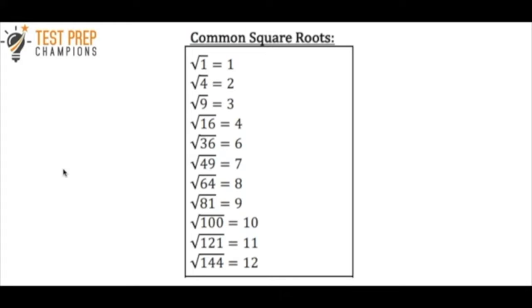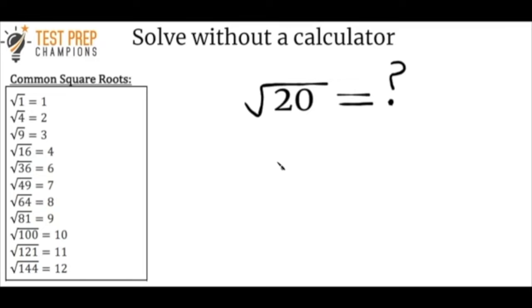To make life simple, here's a list of common square roots you can memorize, add to your notes, or tuck away in the back of your head — they're going to come up a lot. If on your test you get the square root of 20 equals blank and you have to solve it without a calculator, think of pairs of numbers that multiply together to give you 20: 20 and 1, 10 and 2, or 4 and 5.